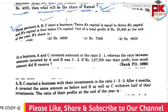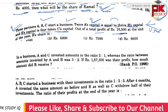Three partners A, B, C started a business. Twice A's capital equals thrice B's capital, and B's capital equals 4 times C's capital. Out of the total profit of Rs. 16,500 at the end of the year, find each partner's share. This is a very important and most-repeated question, guaranteed to appear in the district court exam.